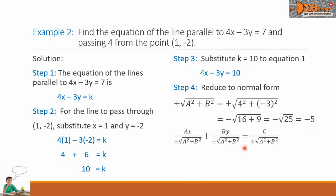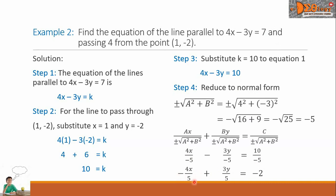For the normal form equation, substituting the corresponding values, we have 4x over negative 5, then minus 3y over negative 5, equals 10 over negative 5. Simplifying: this becomes negative 4x over 5 plus positive 3y over 5 equals negative 2.